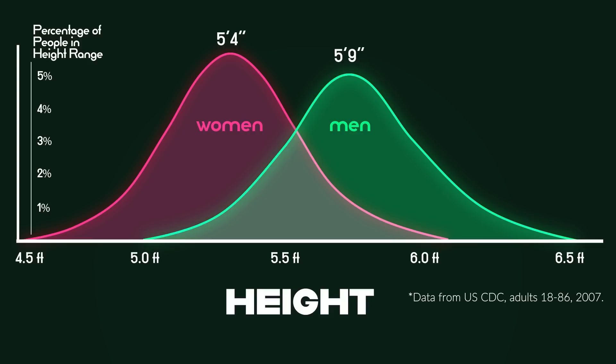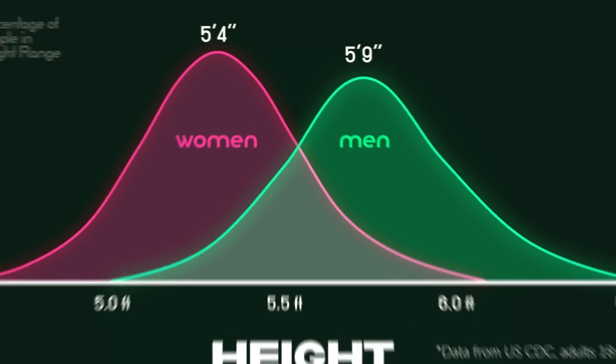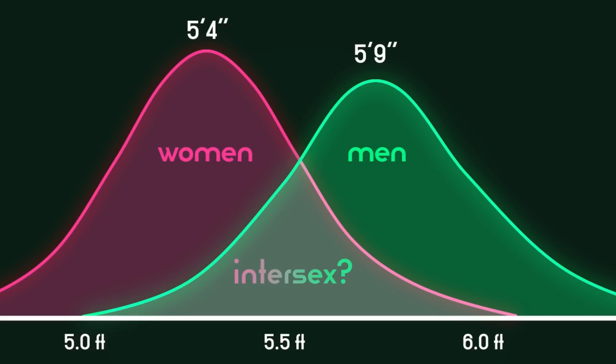We can see that there is considerable overlap in height between men and women. But does this overlap create new sex categories? Or does it simply show where men and women share a common set of values of a given trait?